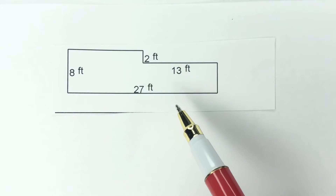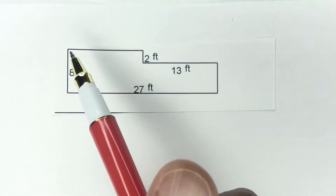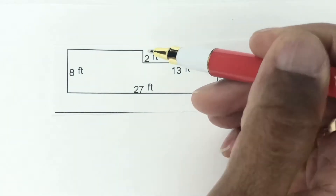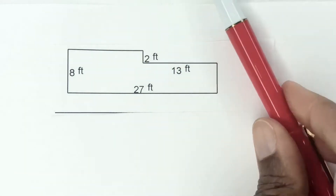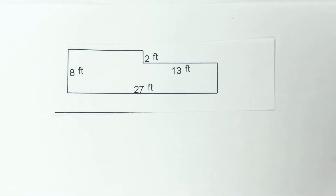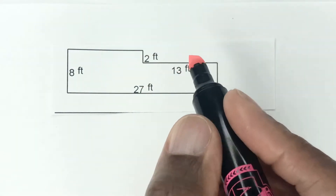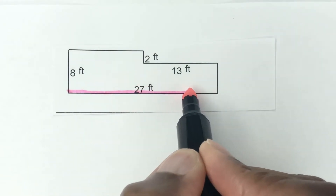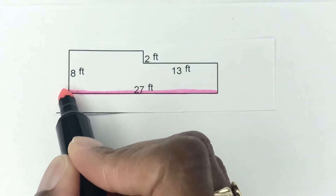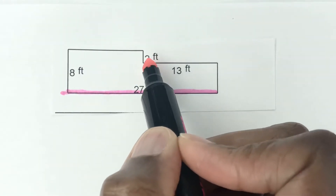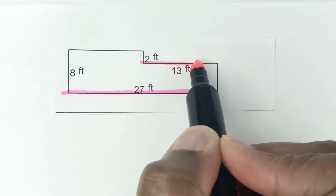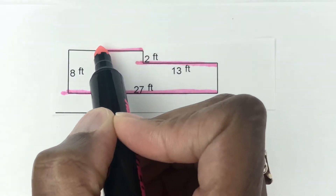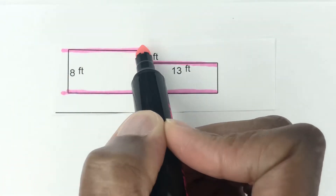The first thing to do is we're going to work with the horizontal lines and then we're going to work with the vertical lines. Let's go first with the horizontal. The whole horizontal of this shape is 27 feet. Then we have this horizontal showing 13, and then we have this horizontal here that has the missing side.